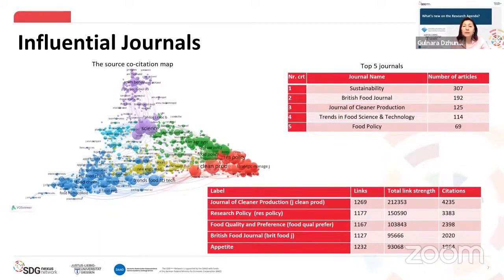The data in the second table reveals that the journal with the highest number of published articles from our sample database is the Sustainability journal. The next journals are the British Food Journal and the Journal of Cleaner Production.